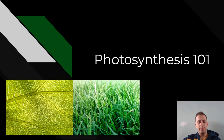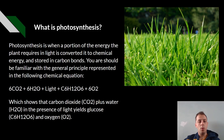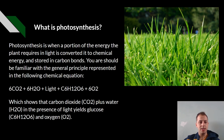The process of photosynthesis. So what is photosynthesis? Photosynthesis is when a portion of the energy that a plant requires in light is converted to chemical energy and then stored in carbon bonds.